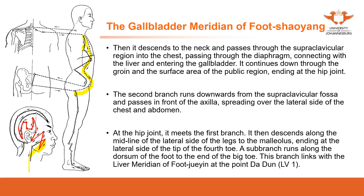So internally the flow travels through the chest, passes through the diaphragm, connects with the liver and gallbladder, keeps turning downward to the groin, goes to the surface of the pubic region, and enters the hip joints. The other branch runs downward from the supraclavicular fossa and spreads over the lateral side of the chest and abdomen.